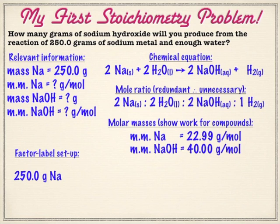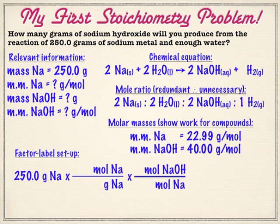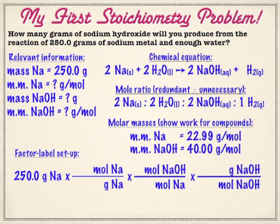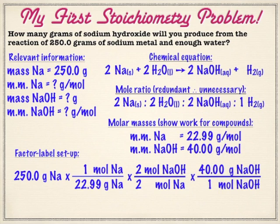So let's set up the factor label problem. We start with 250 grams of sodium. We're going to go from grams of sodium to moles of sodium — we always go to moles. Moles allow you to connect elements to other elements or compounds to other compounds. The second step is the mole-mole ratio — that's really all stoichiometry is. We have a little more than 10 moles of sodium. It's a 2-to-2 ratio, which means we'll have about 10 moles of sodium hydroxide too. With the molar mass of 40 grams, 40 times a little more than 10 gives us 435.0 grams of sodium hydroxide. And that's it.